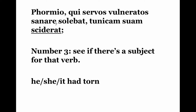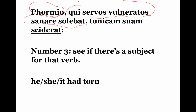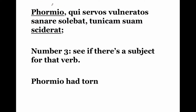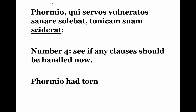Let's see if there's a subject for that verb. In isolation, sciderat would mean he, she, or it had torn. Don't look inside the clause — remember, the clause is its own entity, its own little mini sentence. Outside the clause, we have Formio. Formio is our subject. Formio had torn.